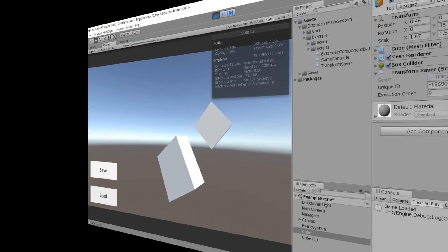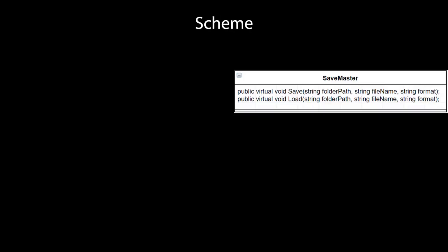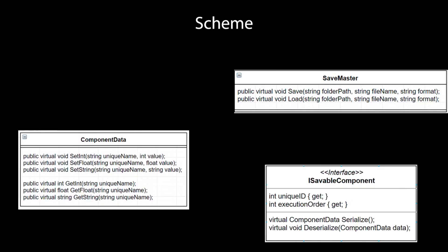The next one is the Expandable Save System. It's a simple and effective asset which helps you create your own save system. It has clear and defined source code, is very expandable with full user control, easy to use, and it's free. It also has a tutorial to help you implement your very own system.